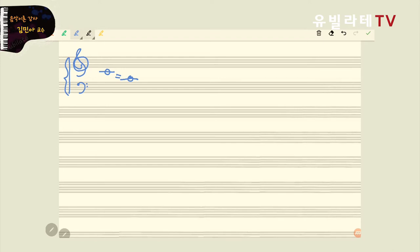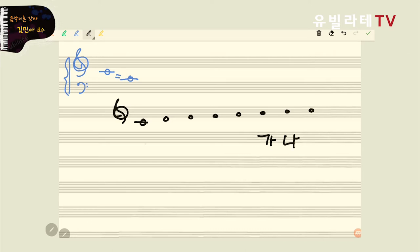지난주 숙제가 무엇이었냐면 음계, C메이저를 그리고 다장조를 그리고 외워오기를 했어요. 왜냐하면 저같이 궁금한 게 많으신 분들은 왜 도레미파솔라시도가 C부터 시작하지? 라고 궁금하실 수 있기 때문이에요. 그래서 역사적으로 A가 먼저 있었다, A의 음계가 먼저 있었기 때문에 우리가 A부터 알파벳을 붙였다 라고 말씀드렸어요.